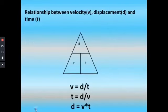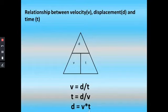The relationship between velocity, displacement, and time: velocity equals displacement divided by time; time equals displacement divided by velocity; displacement equals velocity multiplied by time. When you know the value of any two quantities, you can find the third.